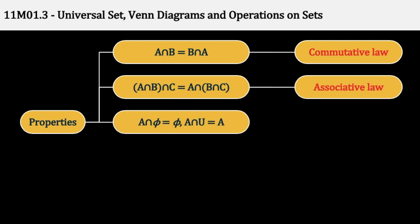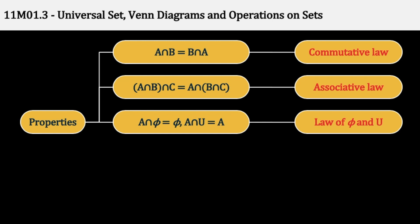तीसरा: A Intersection Phi, मतलब की A का Intersection Null Set से — Phi मतलब Null Set, मतलब 0 elements, no elements, खाली set — तो उसका Intersection A से निकालेंगे तो वो भी Null Set आएगा, क्योंकि Null Set में तो कोई element है ही नहीं. Similarly, A Intersection Universal Set equal to A. Universal Set यहाँ बड़ा Set है, A is a Proper Subset of Universal Set, hence छोटा Set will be my answer, hence A Intersection Universal Set equal to Set A. इसको बोलते हैं Law of Phi and Law of U.